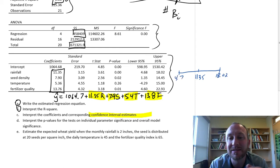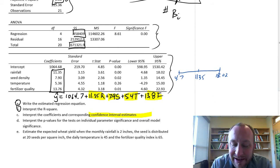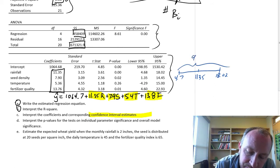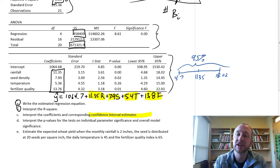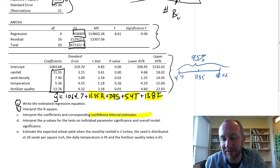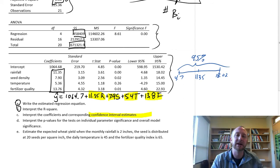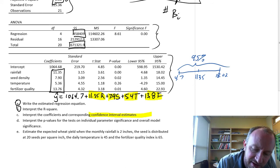So our point estimate is for each additional inch of rain, that contributes an average of 11.35 pounds to our average wheat yield, and we're 95% confident that each additional inch of rain that we receive contributes between 4.7 and 18 pounds of wheat. And the same description can be used for each of these intervals.